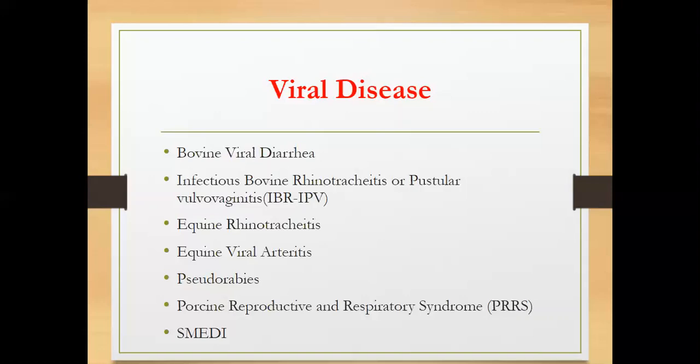Next is porcine reproductive and respiratory syndrome (PRRS), a relatively new disease discovered in 1987. The affected species are swine, and it is caused by an arterivirus. Its effects include abortion, stillbirth, mummified fetuses, premature farrowing — giving birth days short of full term — and respiratory disease in neonates that survive, manifesting as coughing and sneezing. It also affects nursery and finisher pigs. PRRS is quite prevalent here in the Philippines.